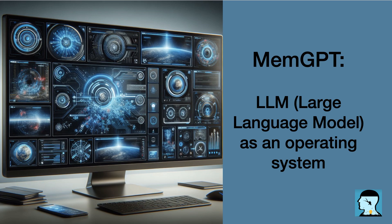MEMGPT utilizes interrupts to manage control flow between the model and the user in a chat-based application. Interrupts are events triggered by external factors such as user messages, system messages, user interactions, or timed events. When an interrupt occurs, MEMGPT processes it with a parser to convert it into plain text messages that can be appended to the main context.